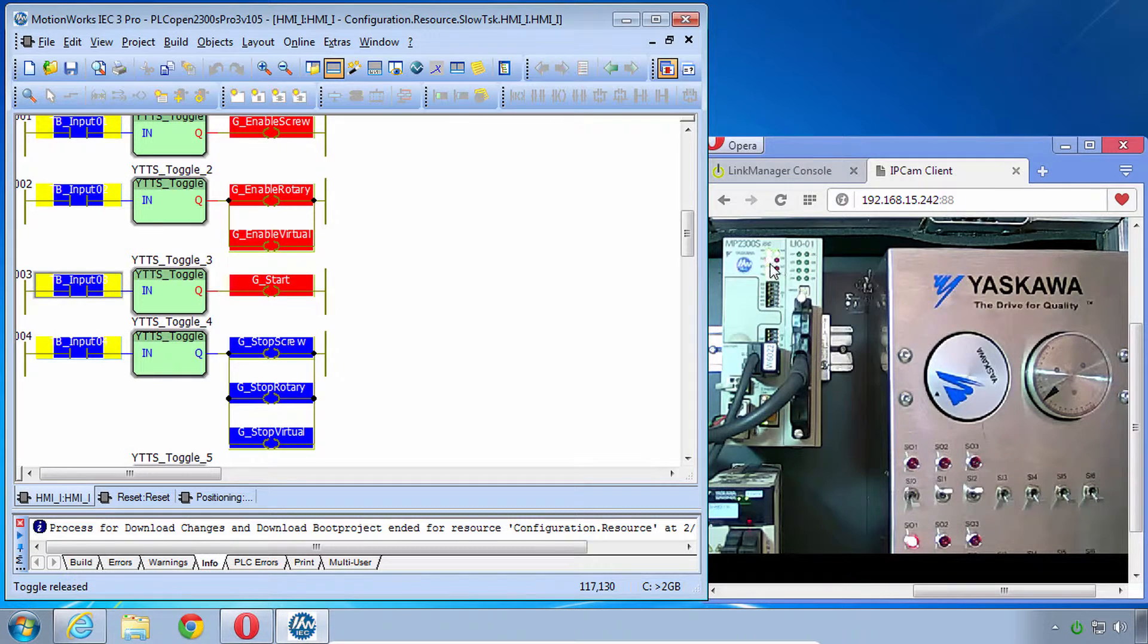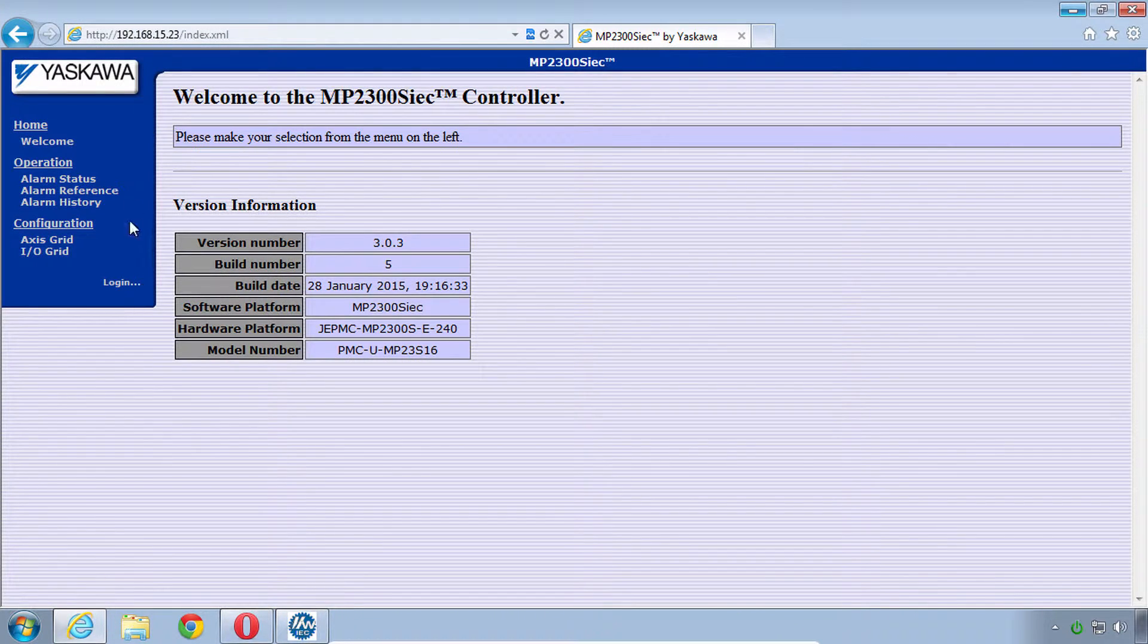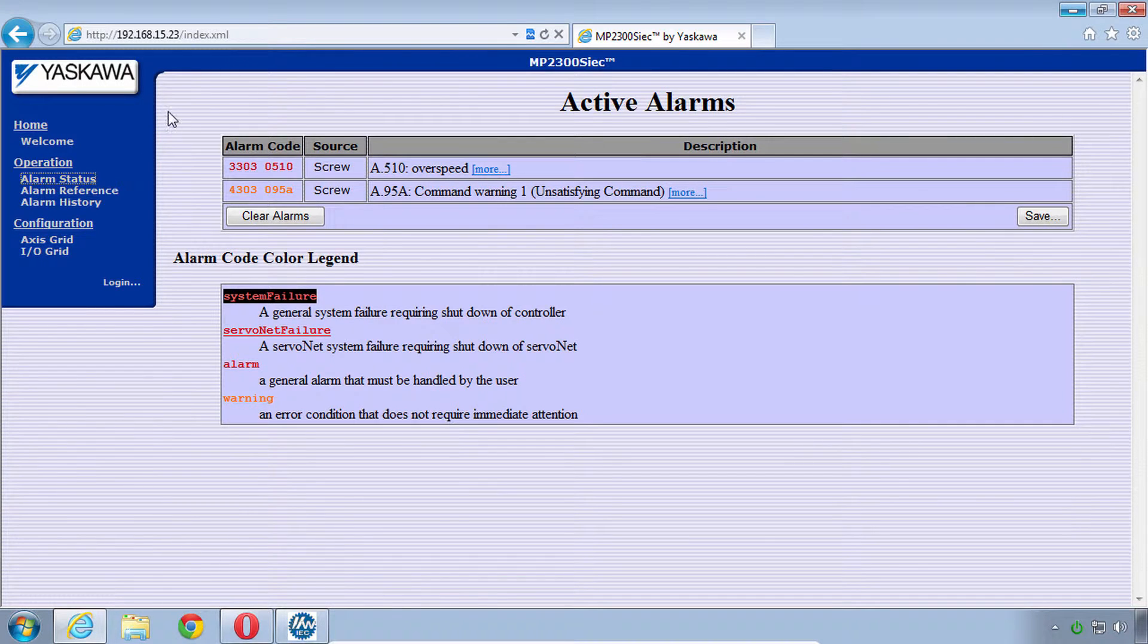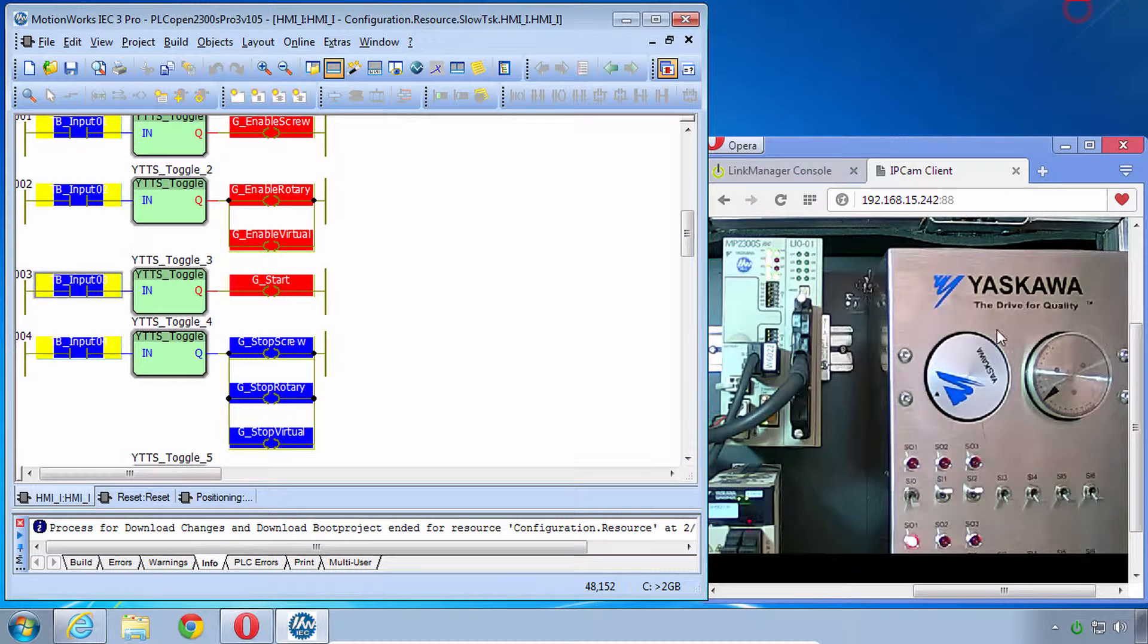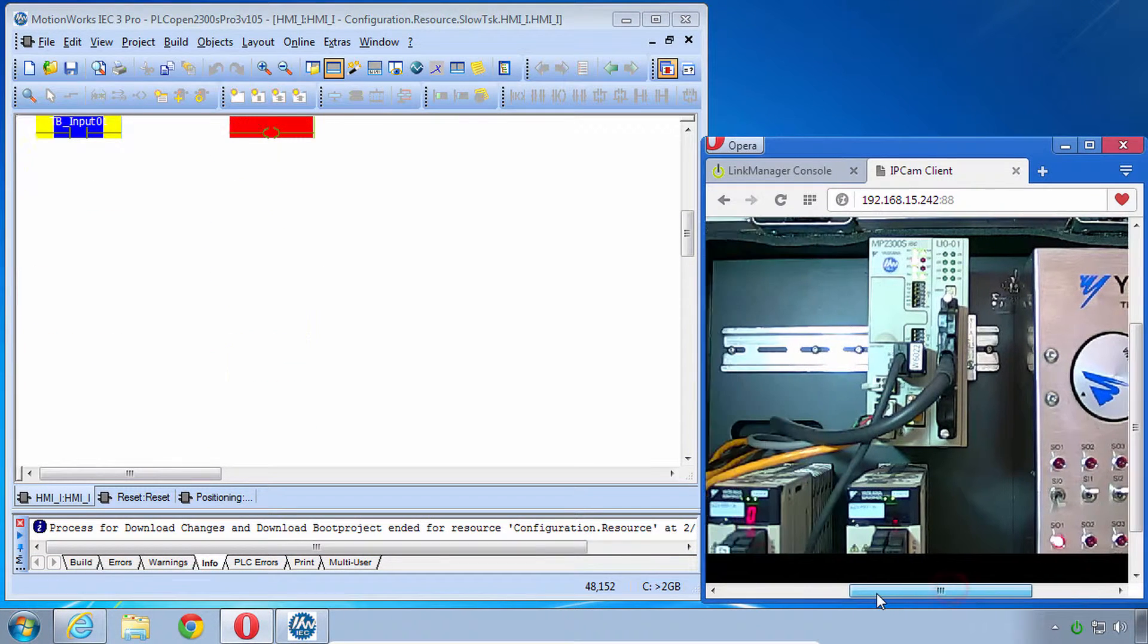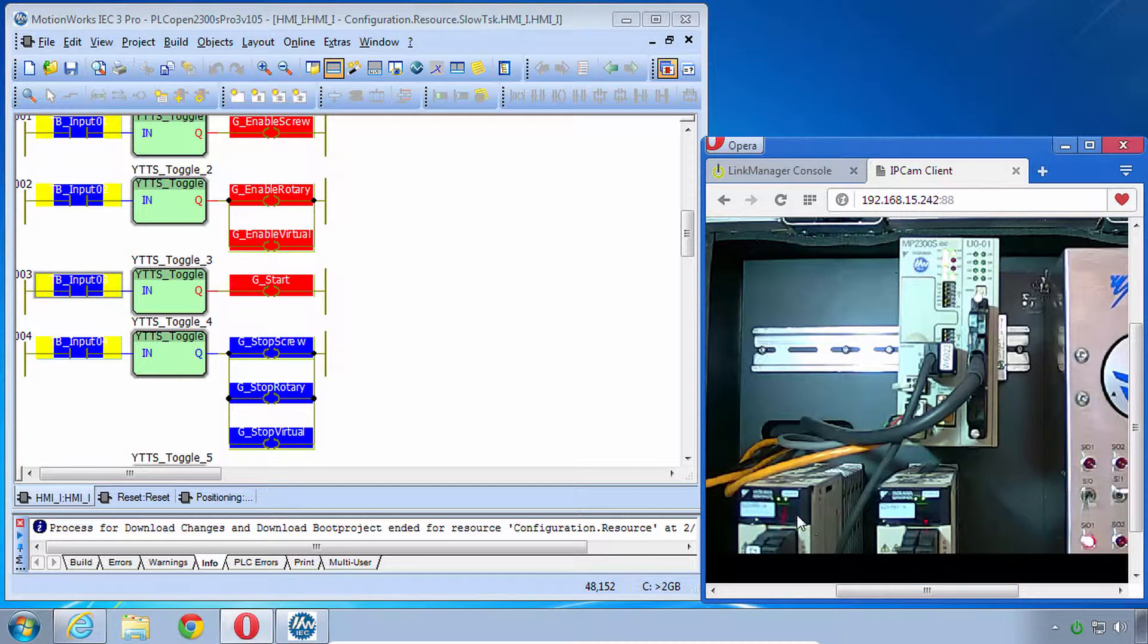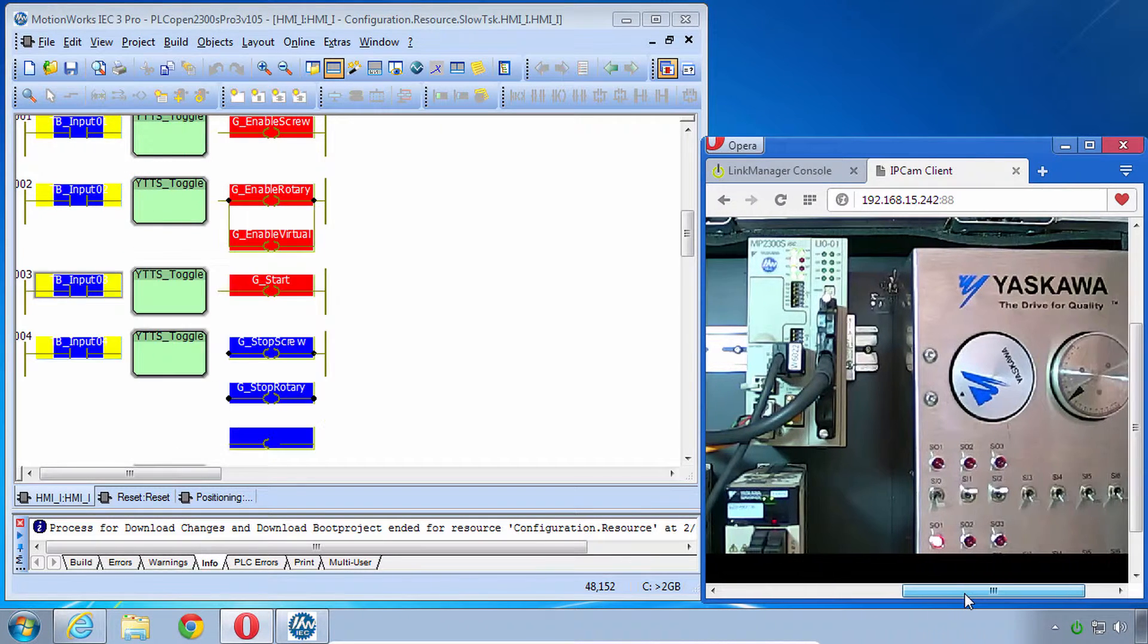But there's this alarm light on. You can kind of tell it's red. There's a controller alarm. Definitely in the web page, if you wanted to look at the alarm status, you could see that there is an alarm A510. That's over speed. If you still don't believe me, you could look at the servo itself. It's flashing A.510. So we've got an over speed A510.